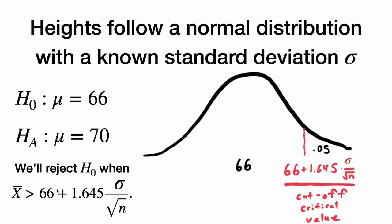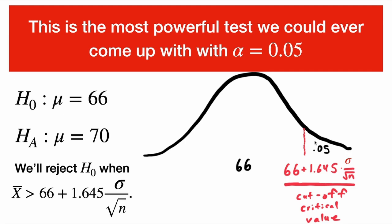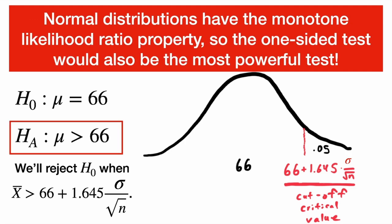If we see a picture of the null distribution of x-bar under the null hypothesis that the average is 66, we reject when we're greater than some cutoff, and we only want to incorrectly reject 5% of the time. That cutoff is 66 plus 1.645 standard deviations — found using software or properties of normal distributions and z-scores. This is the most powerful test we could ever come up with at alpha equals 0.05. Normal distributions have the monotone likelihood ratio property, so the one-sided z-test we're familiar with from intro stats is the most powerful test possible at alpha equals 0.05, which is exactly why we learn it.